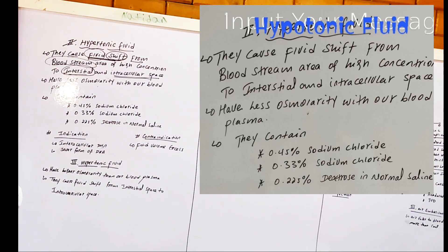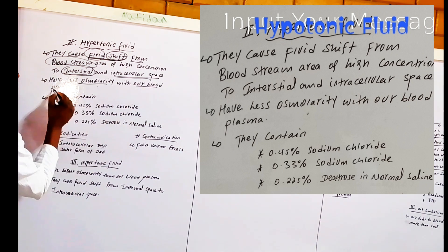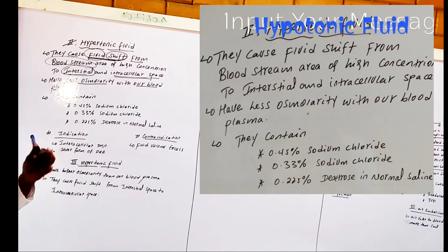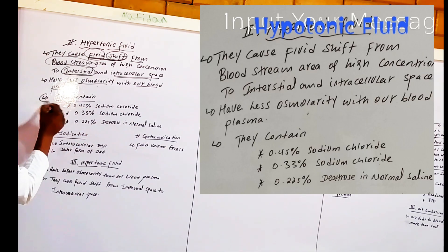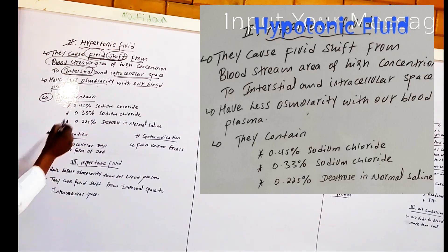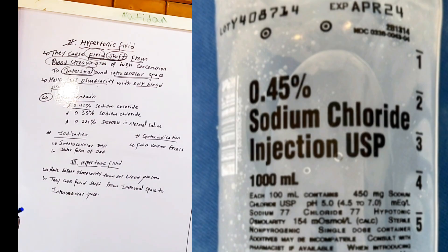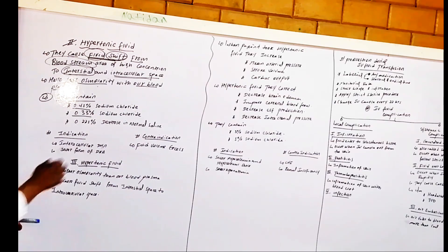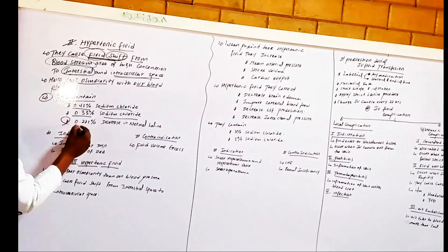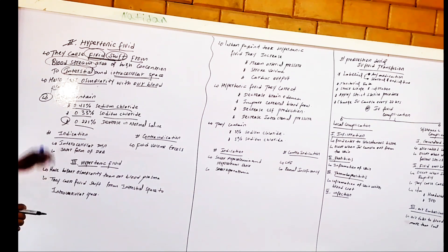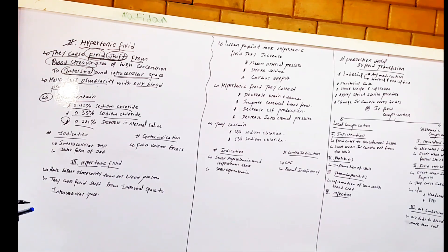Hypotonic crystalline fluid has a lower osmolarity than blood plasma. Hypotonic fluids contain 0.45% sodium chloride, 0.33% sodium chloride, and 0.225% dextrose normal saline. So 0.45% sodium chloride and 0.225% dextrose in normal saline are considered hypotonic fluids.